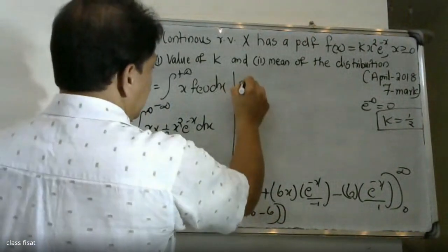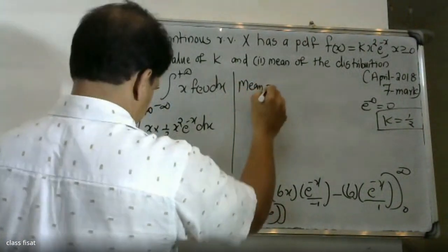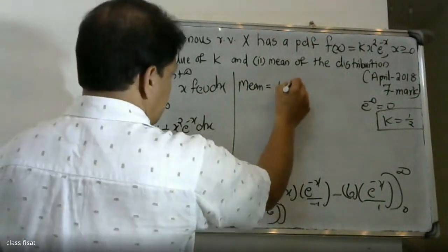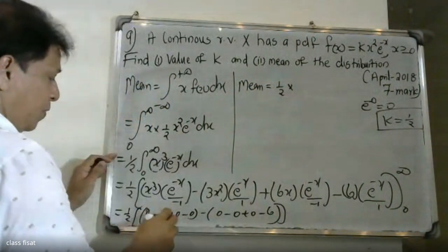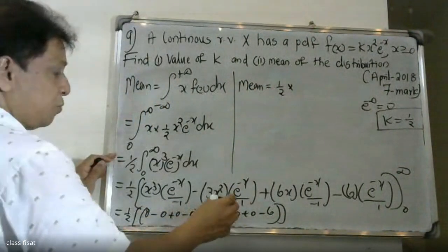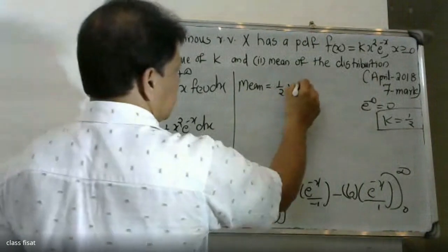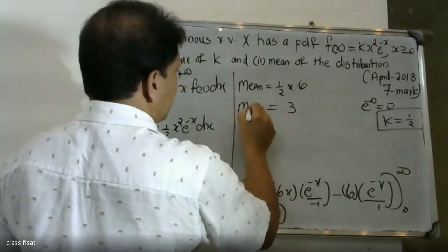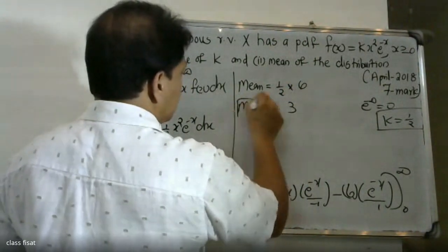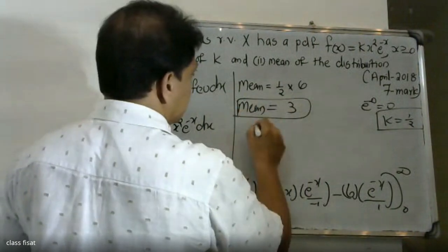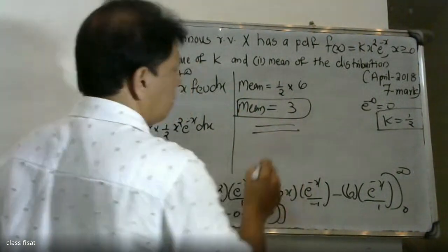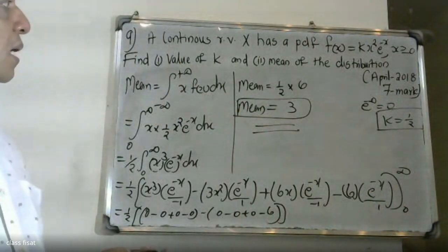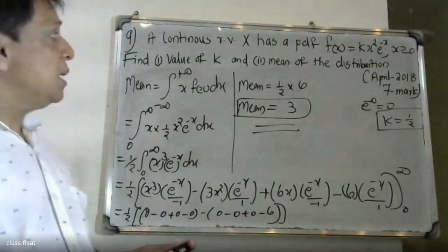The mean is equal to 1 by 2 into the evaluated expression, giving the mean of the distribution. The answer to this problem is now complete.